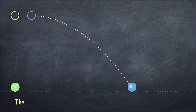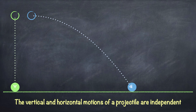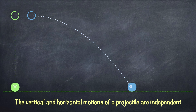So the vertical and horizontal motions of a projectile are independent. The fact that the ball bearing on the right was projected horizontally had no effect on the time it took for it to fall to the ground, since it took the same time as the ball bearing on the left which fell straight down. Now, let's imagine that both ball bearings take exactly 5 seconds to fall to the ground and that the ball bearing on the right is projected with a horizontal speed of 25 m/s.